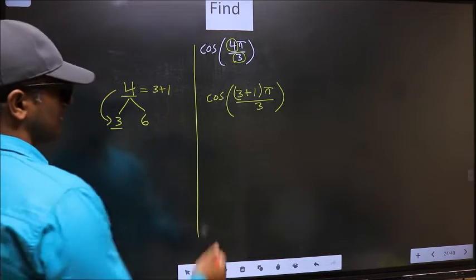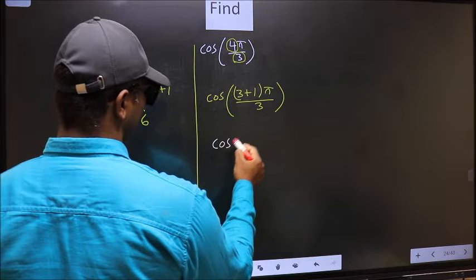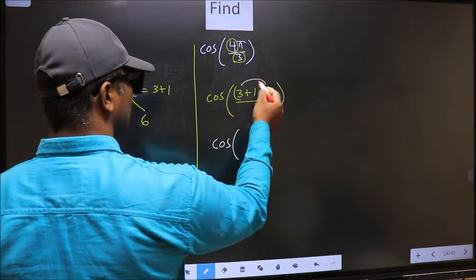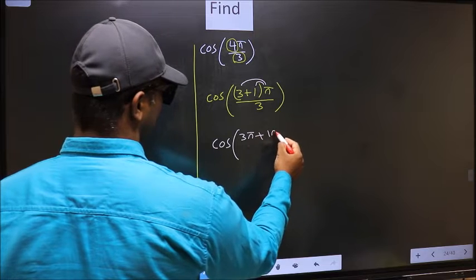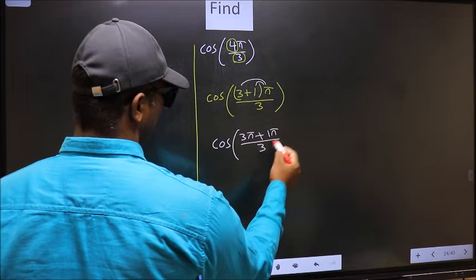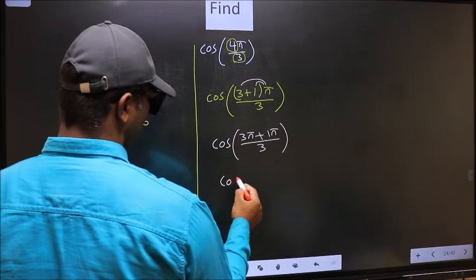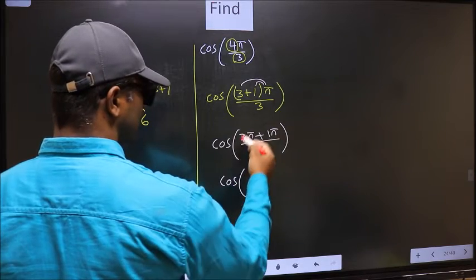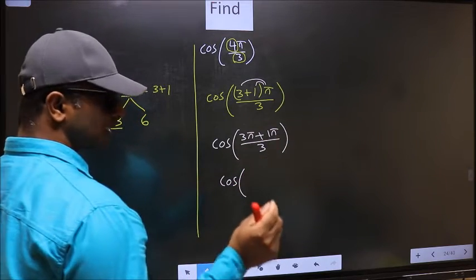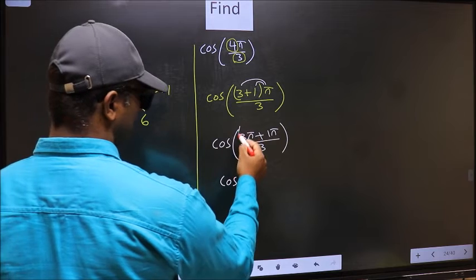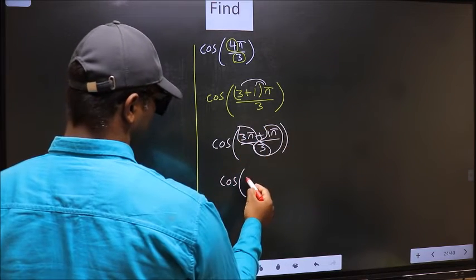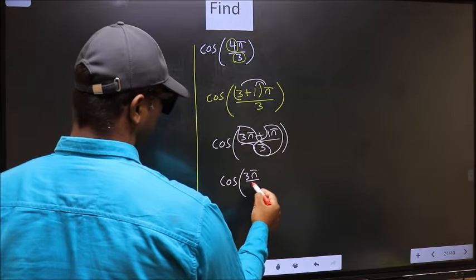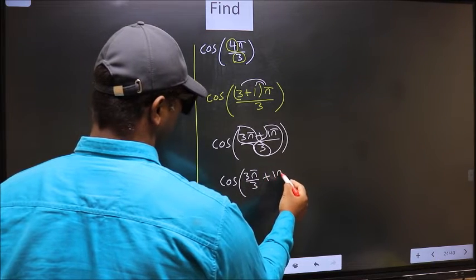Next, cos. Now you should open the brackets. You get 3π plus 1π by 3. Now cos, in this, you should split the denominator in this way.